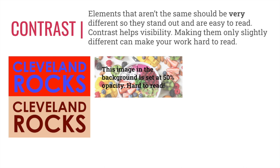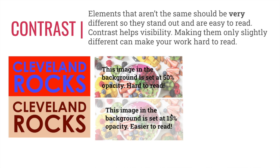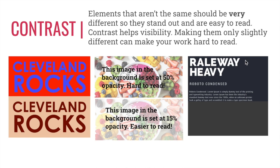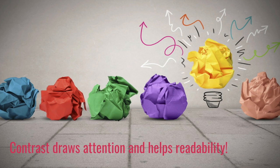Let's look at another example. Contrast helps visibility — making things only slightly different can make the work hard to read. In this example, the background image has been reduced to 50 percent opacity. It's still a little hard to read compared to this image that was reduced to 15 percent opacity, which has a lot of contrast and is therefore easier to read. You can also have contrast in size. This title image Railway Heavy is a very large font compared to its body text, which helps the reader know where the title is versus the body text.